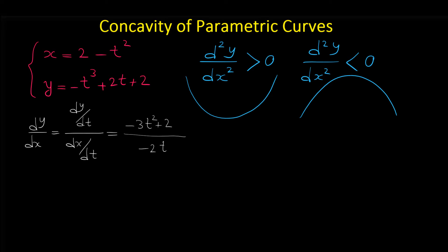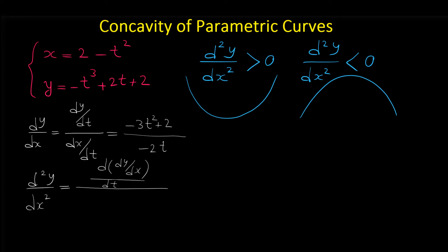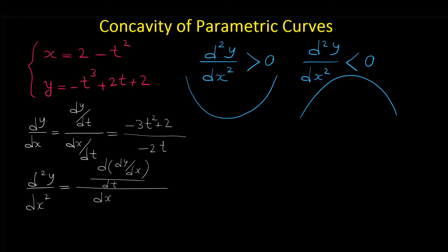Now from this we can find the second derivative d²y/dx². For finding the second derivative of parametric curves, watch my other videos about derivatives of parametric curves. The formula we use is: d²y/dx² equals the derivative of (dy/dx) with respect to t in the numerator, over dx/dt.